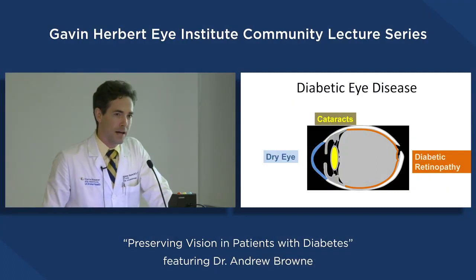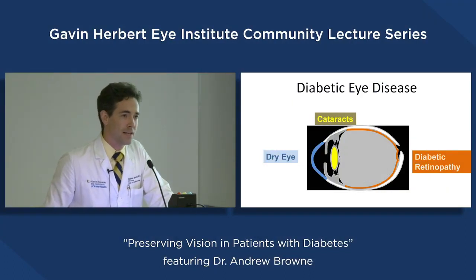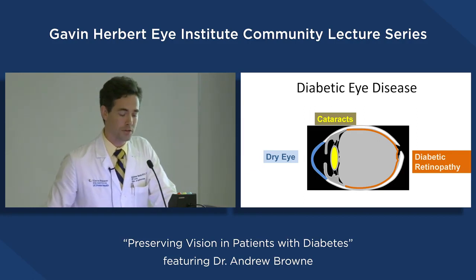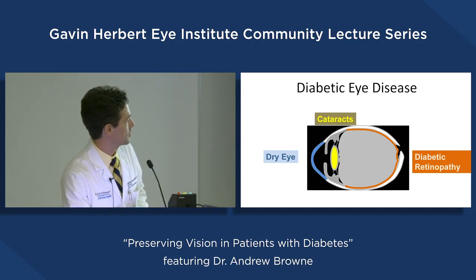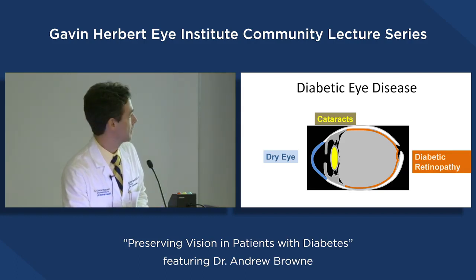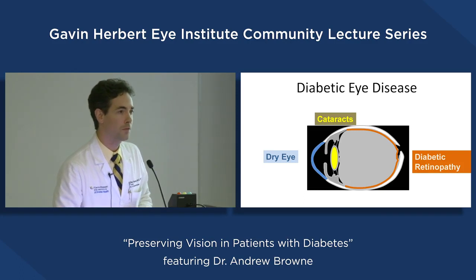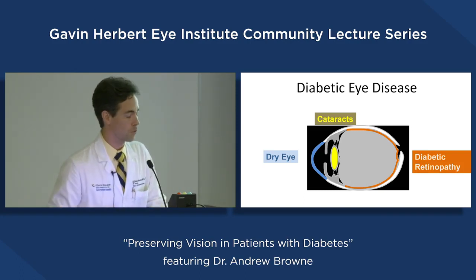Diabetes affects all parts of the eyes — from dryness on the surface, to cataract formation where the lens inside the eye becomes opaque, to diabetic retinopathy where the film in the camera stops working.